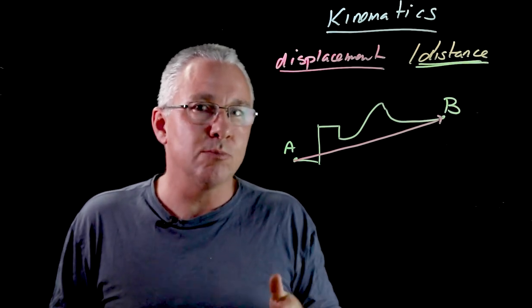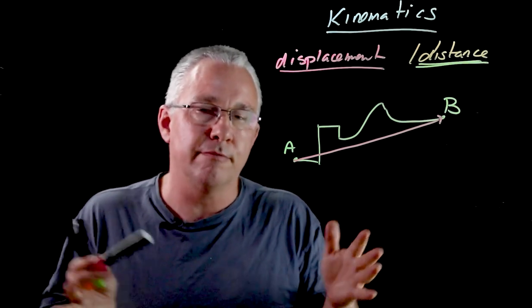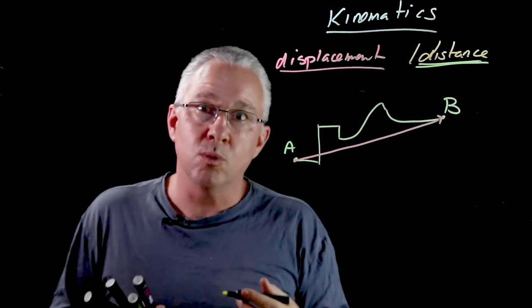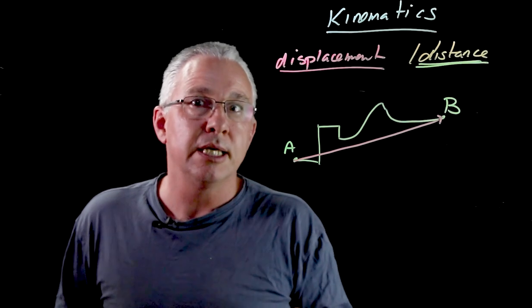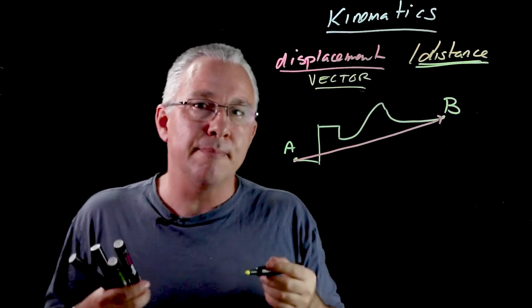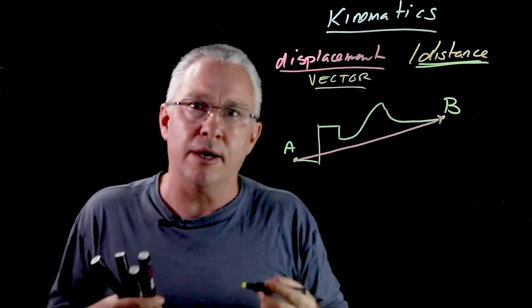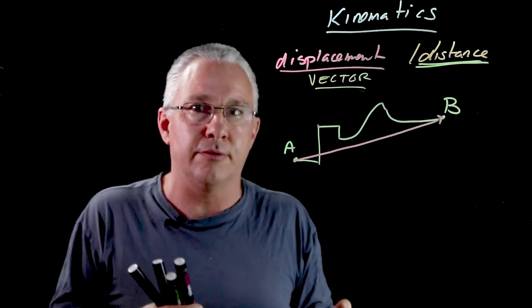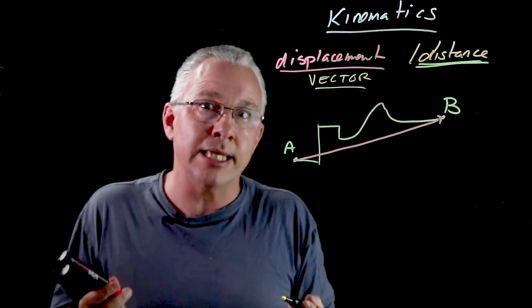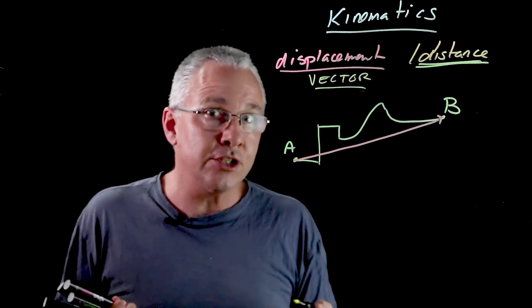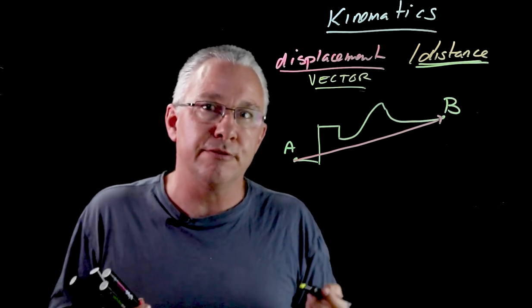But the second aspect here is that this aspect of here which is the arrow. Displacement is more than just the length of the path between the two points. It's also the direction which is also critical. So what we say is displacement is a vector quantity. Now what does that mean? That means it's a dimension, a measurable quantity, that has both a magnitude and a direction. As soon as the magnitude changes it's a different dimension. If its direction changes it's also a different dimension.